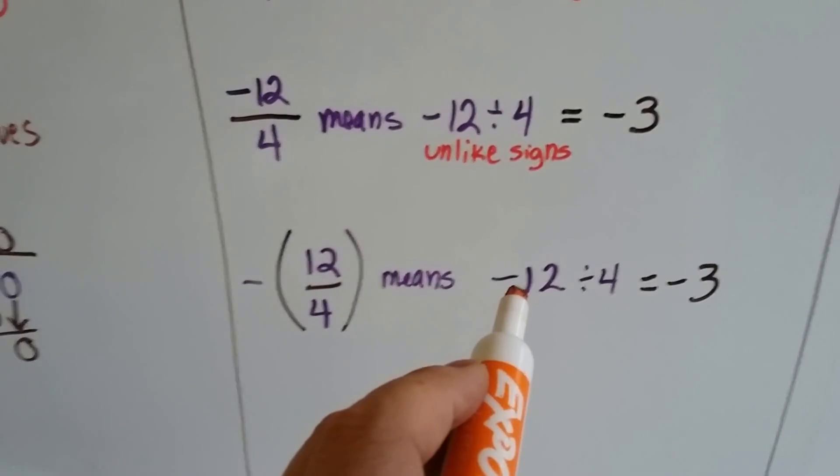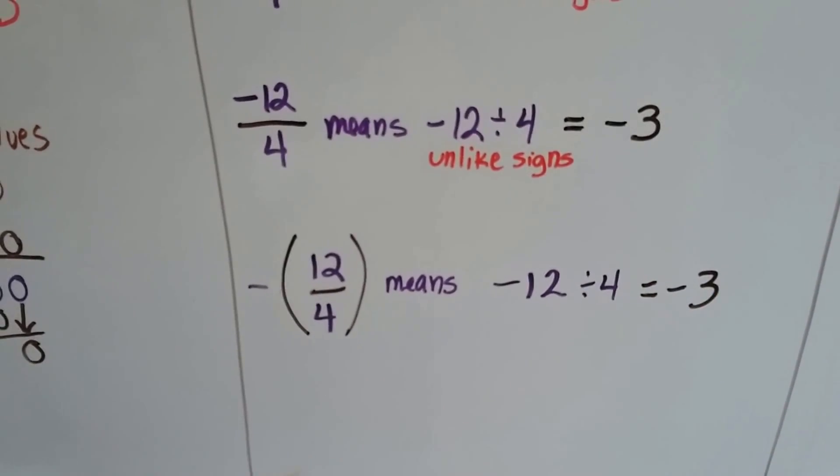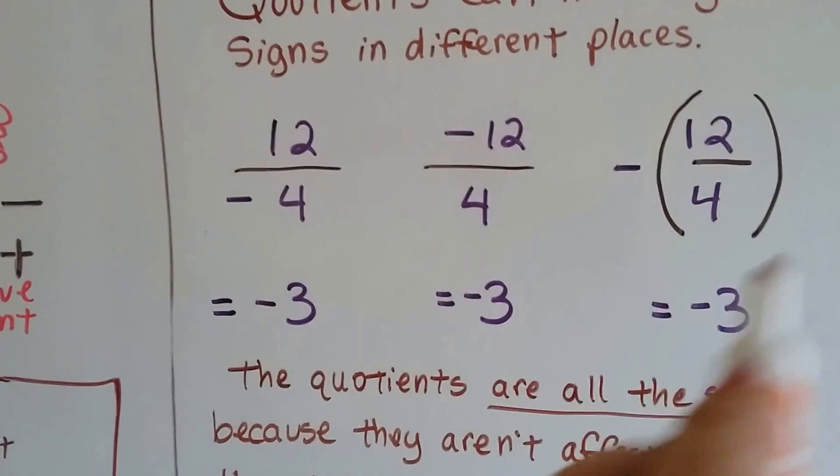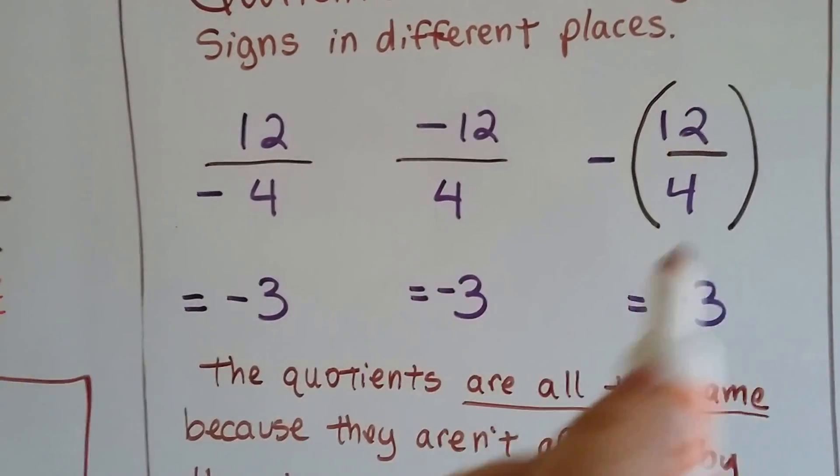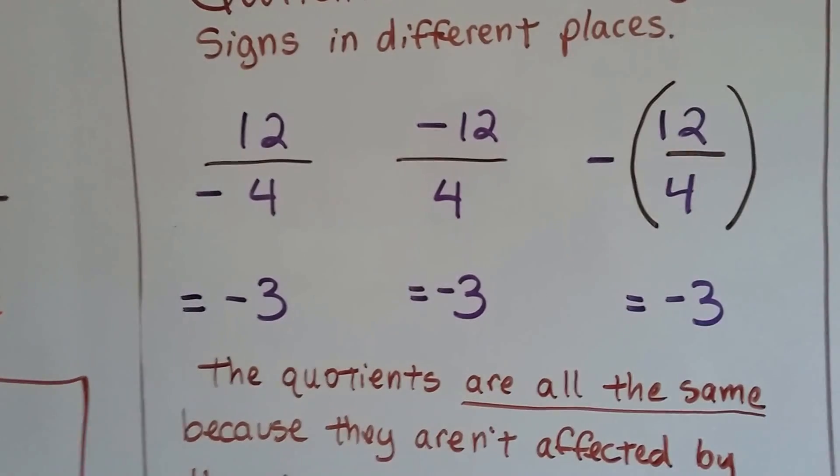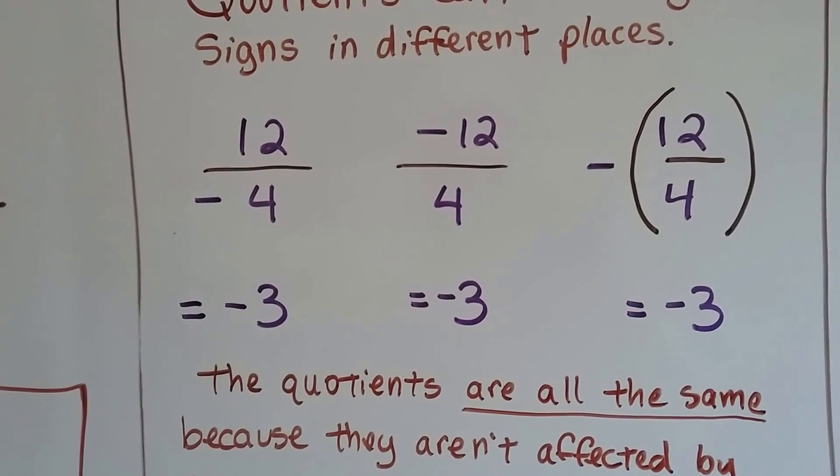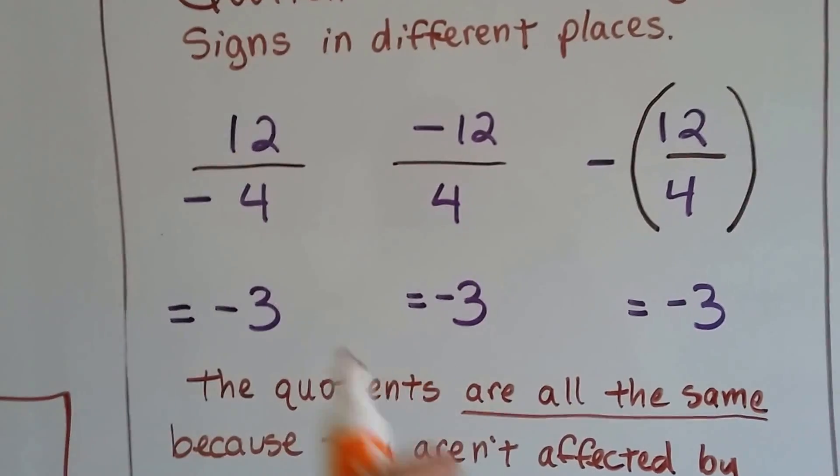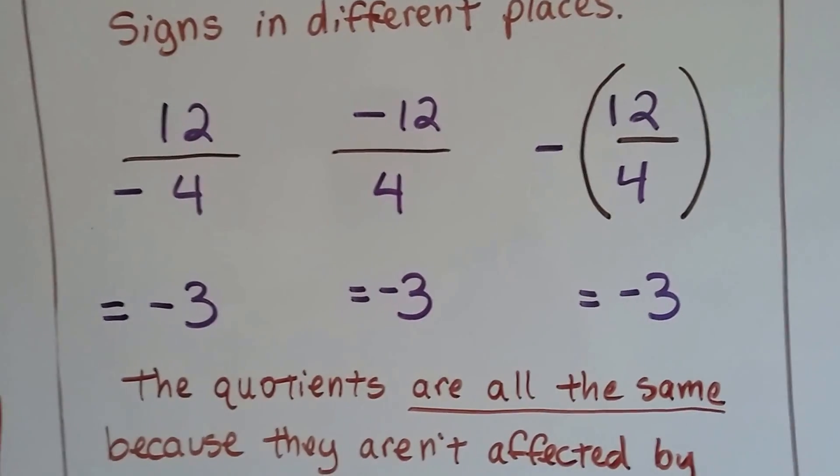This just basically means negative 12 divided by 4, so it's going to be negative 3 also. So all three of these are equivalent to each other. They're all just different ways of writing these ratios, these fractions. If you have to do this, you know that each one of these ways are equivalent.